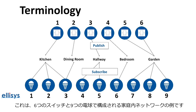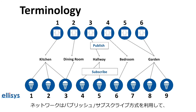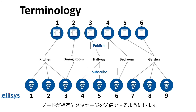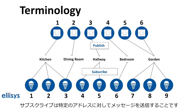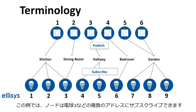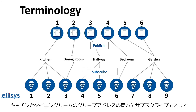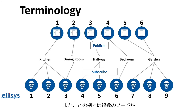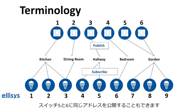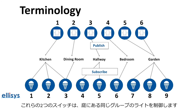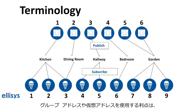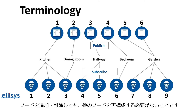Here's an example of a mesh network in a home comprised of six switches and nine light bulbs. The network utilizes the publish-subscribe method to allow nodes to send messages to each other. Publishing is the act of sending a message, and subscribing is the configuration to select messages sent to a specific address. Nodes may subscribe to multiple addresses — for example, light 3 is subscribed to both the kitchen and the dining room group address. Also, multiple nodes may publish to the same address — switches 5 and 6 control the same group of lights located in the garden. The benefit of using group or virtual addresses is that adding or removing nodes does not require reconfiguration of the other nodes.